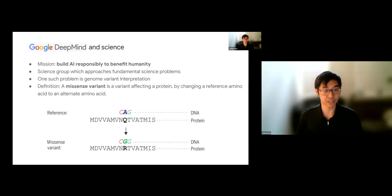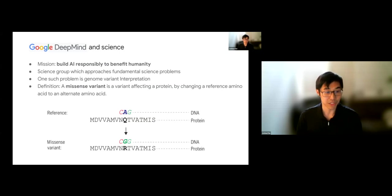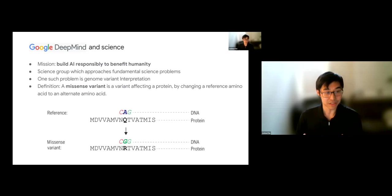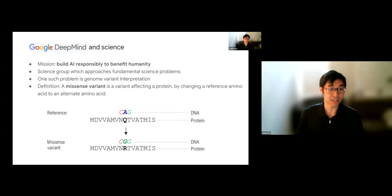A missense variant is a variant that affects a protein by changing a reference amino acid to an alternate amino acid. Mechanistically, this happens when a nucleotide letter is changed — for example, CAG coding for Q can be flipped to start coding for R. This is an example of a missense variant.